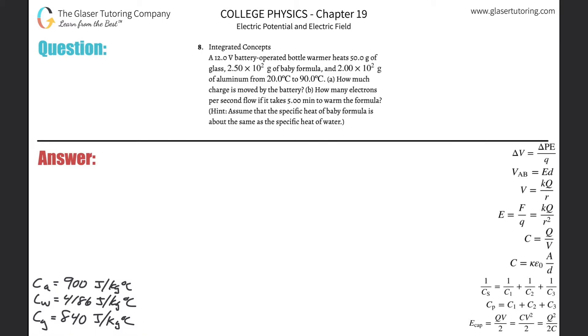Number eight, integrated concepts. A 12-volt battery operated bottle warmer heats 50 grams of glass, 2.5 times 10 to the 2 grams of baby formula, and 2 times 10 to the 2 grams of aluminum from 20 degrees Celsius to 90 degrees Celsius. Letter A, how much charge is moved by the battery?